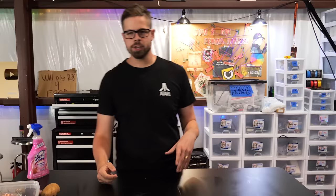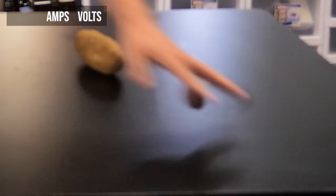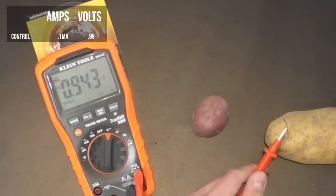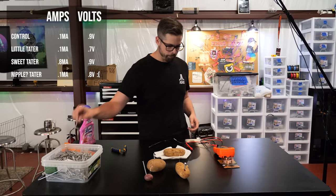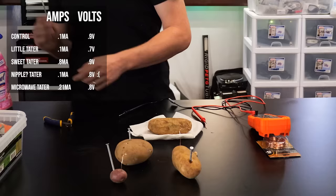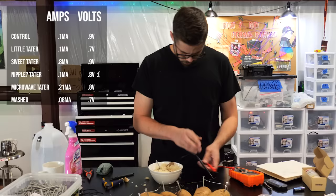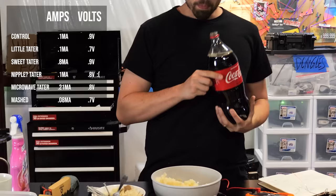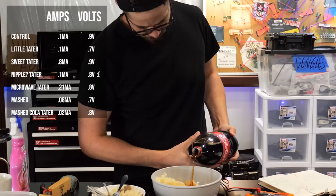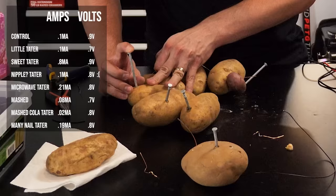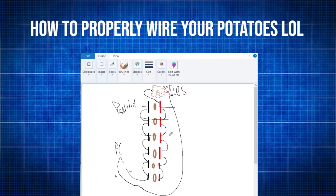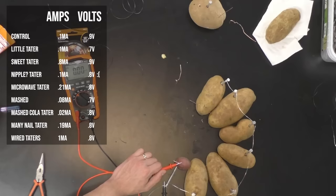Naturally, the next step was figuring out how to get the most electricity with the copper and zinc out of the potato. We did a control test - 0.9 volts. Then we tried little tater, sweet potato, taters with nipples, microwave taters, mash taters. I poured coke on a mashed potato for the phosphate. I tried putting a bunch of extra nails in a potato. I even strung a bunch of potatoes together.